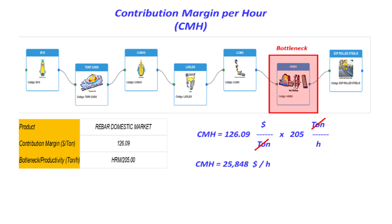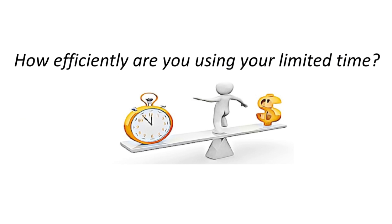This completely shifts the focus from just price to efficiency — how efficiently are you using your limited time? And when DemoSteel applied this metric, this CMH, the results were dramatically different, almost counterintuitive. What about that Bar Domestic Market — the one with the highest CM at $139 a ton?